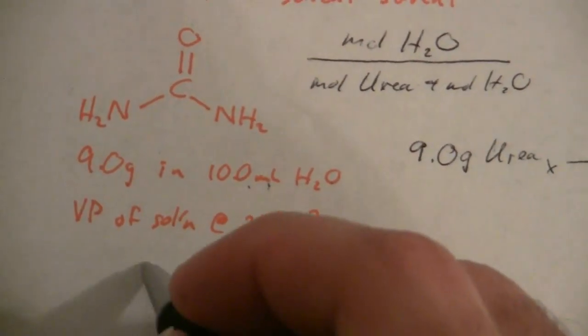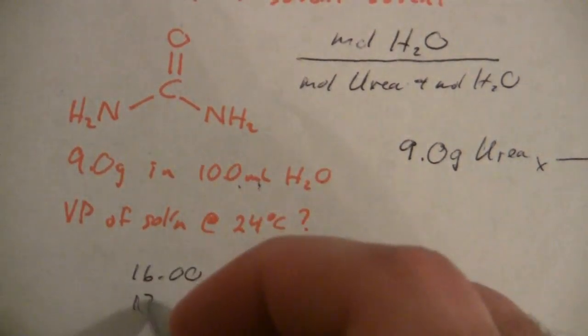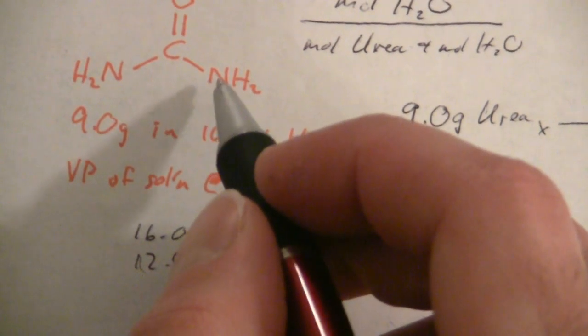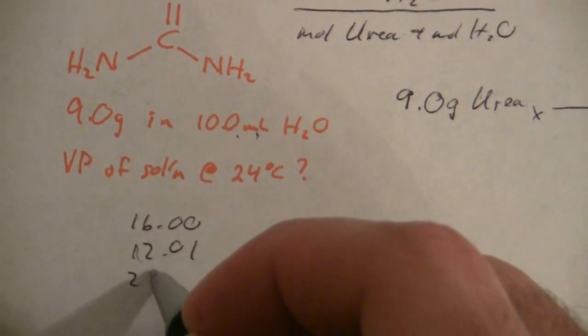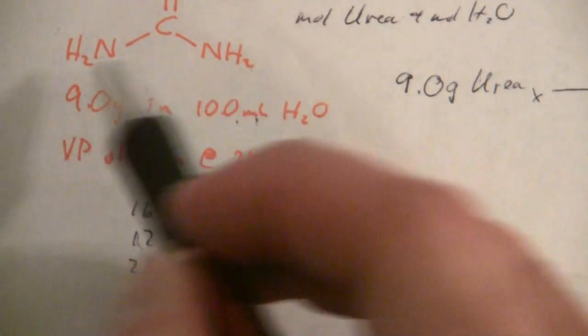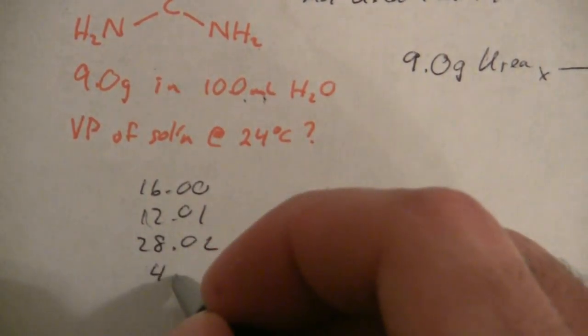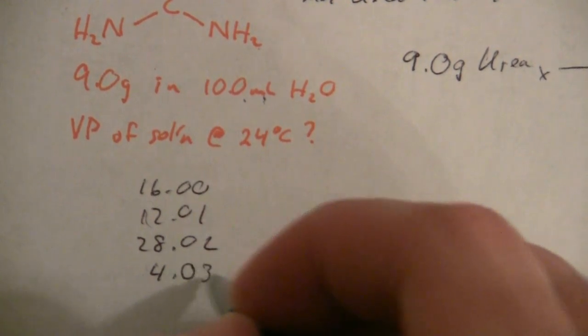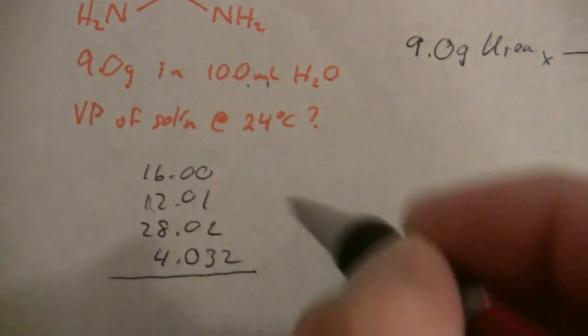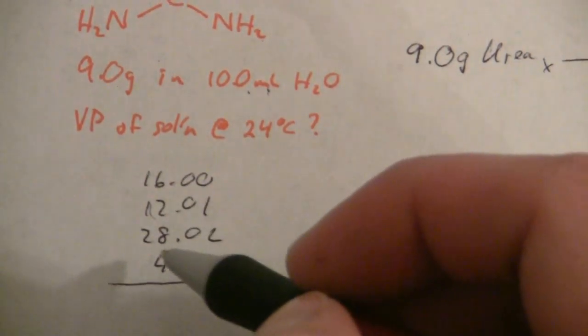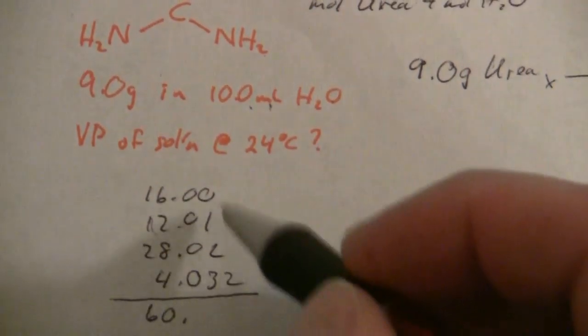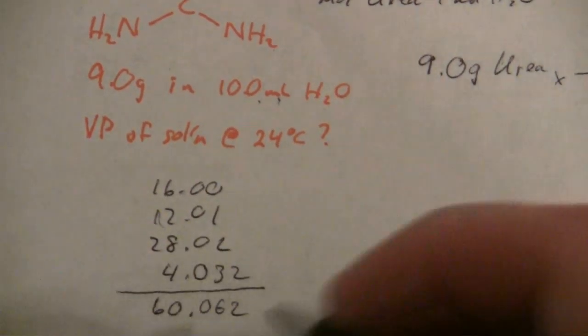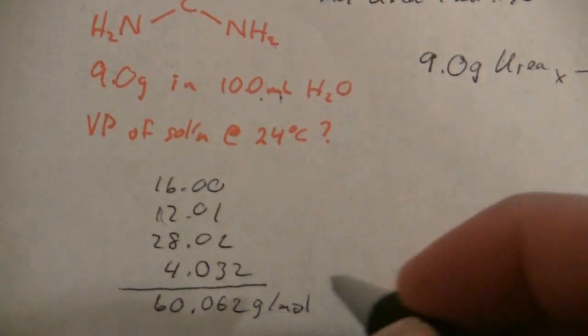Starting with 9.0 grams of urea, how many grams per mole? 16.00, 12.01, and here we have 14.01 times two, so that's 28.02. Then we have 1.008 times four, so that's 4.032. We add those up and get about 60.06.